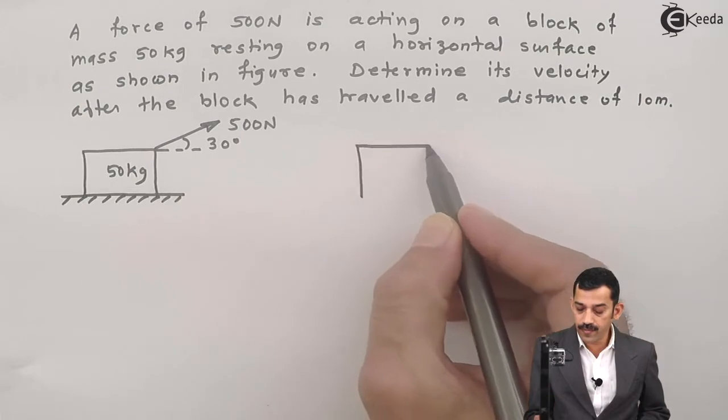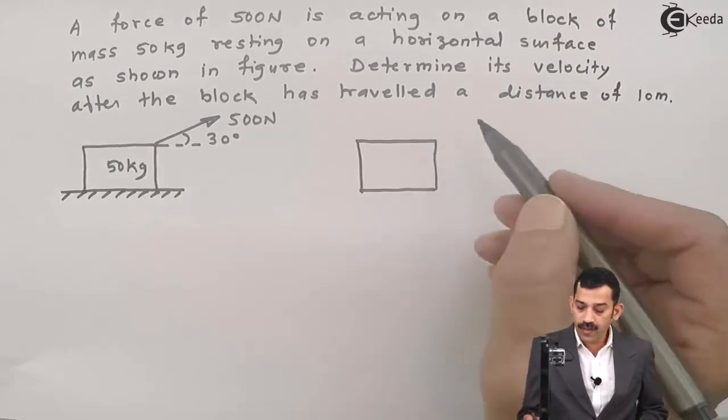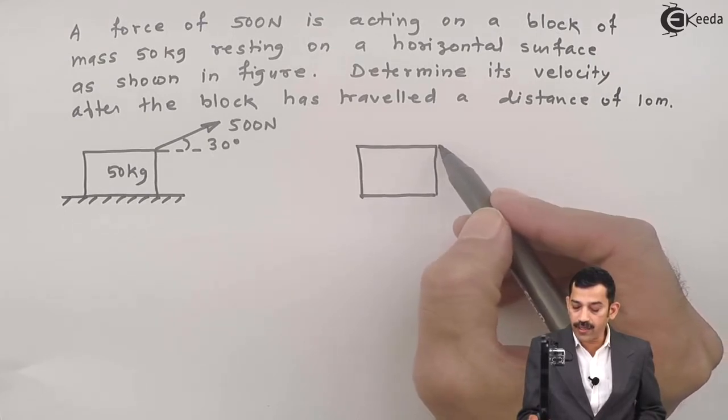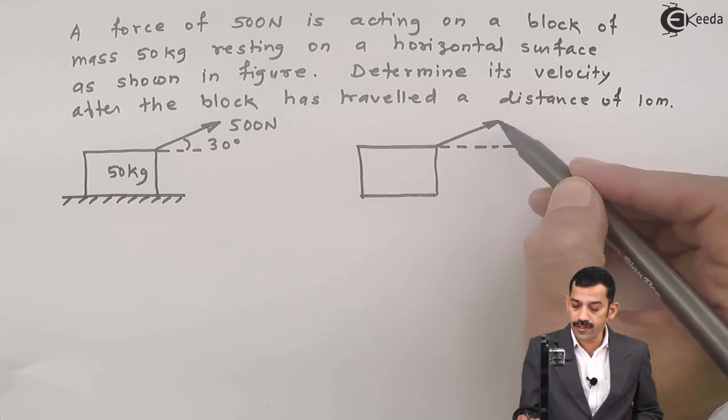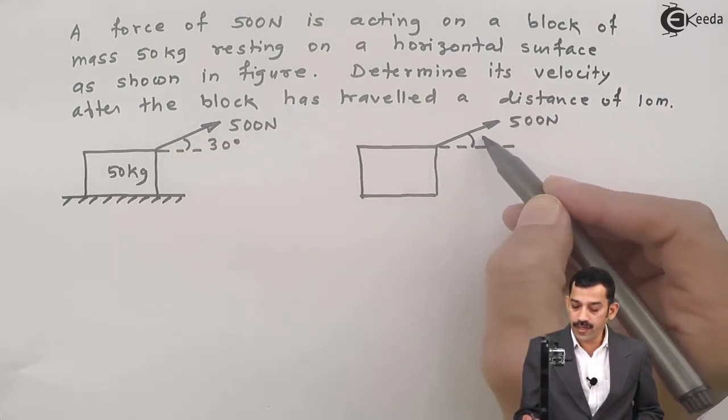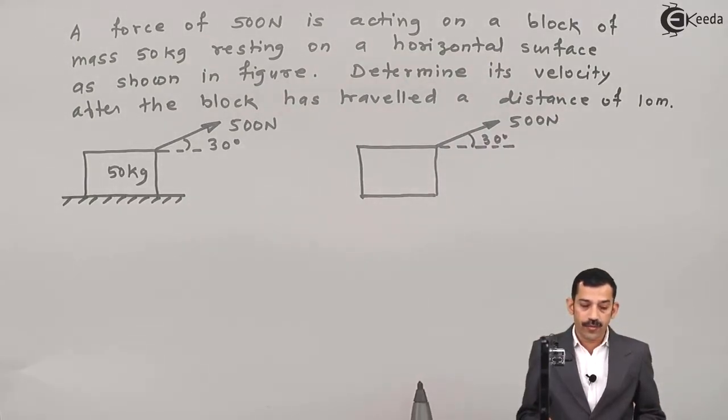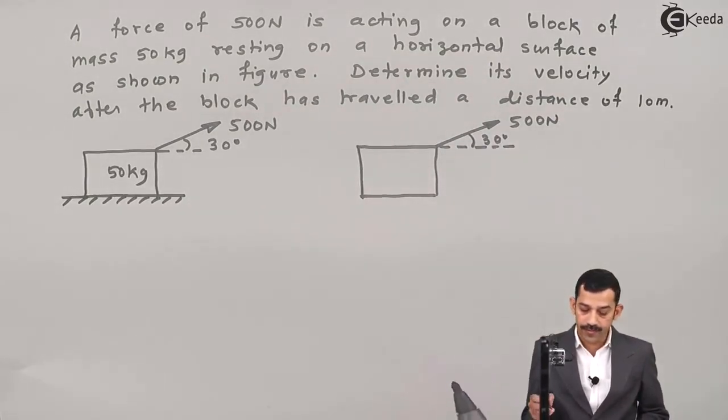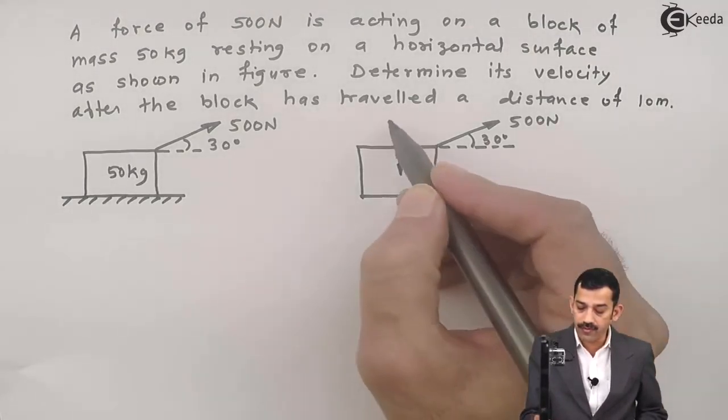External force is 500 Newton inclined at an angle of 30 degrees with horizontal. This force will be represented here as 500 Newton, inclination 30 degrees. Weight of block acts in downward direction. As mass is 50 kg, weight I'll write as 50 into g, acceleration due to gravity.